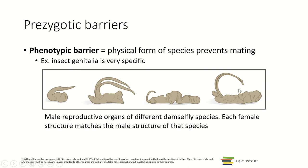These are damselflies, which are similar to dragonflies. You can see a lot of variation in the male genitalia across different species. The female genitalia will only be able to fit the male genitalia of one species — if one male tries to mate with a female that matches a different species, it's literally not going to fit. So that is a phenotypic barrier that would prevent an actual mating.